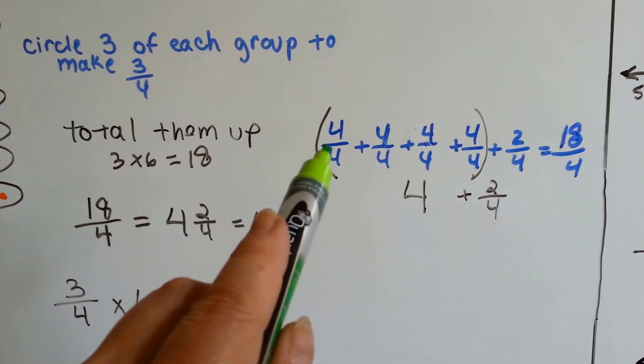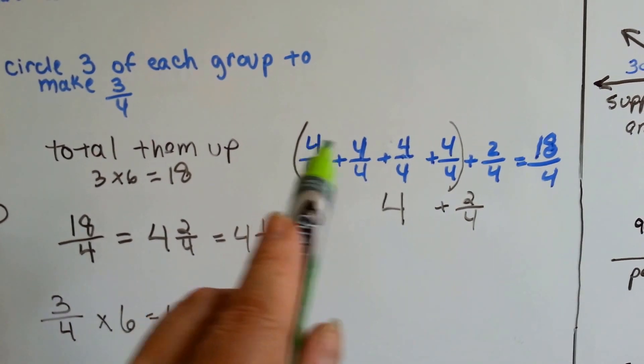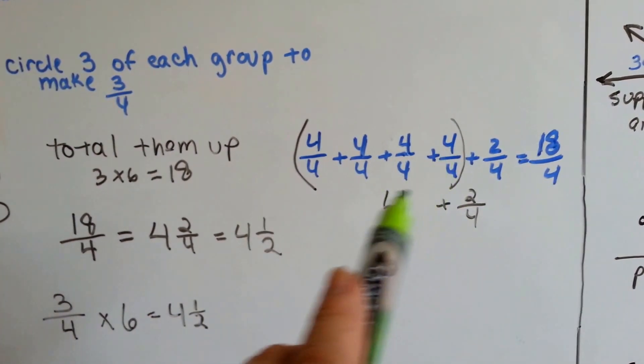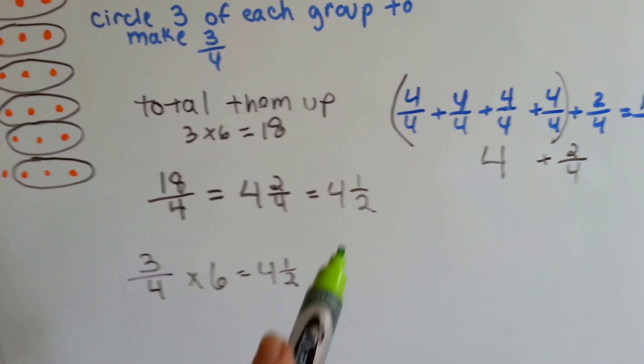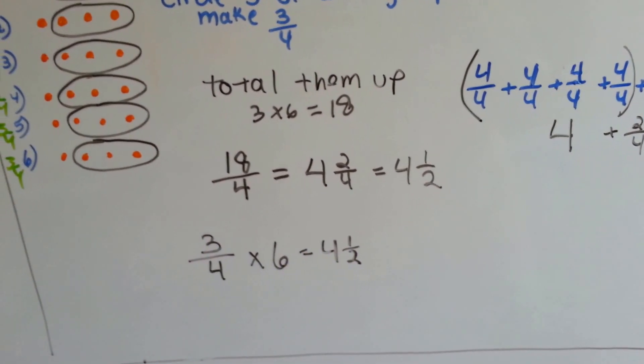Well, I know that 4 fourths is equal to 1, and I can do that 4 times because 4 times 4 is 16. Then there will be 2 left over to get to 18. So that's 4 whole ones and 2 fourths. Two-fourths is equal to one-half. So I know that three-fourths times 6 is equal to 4 and a half.